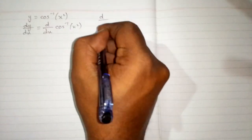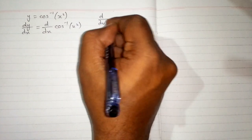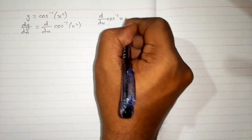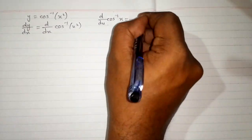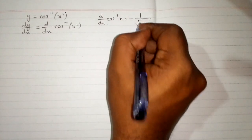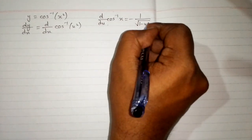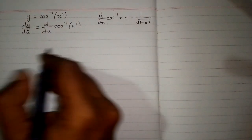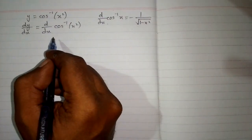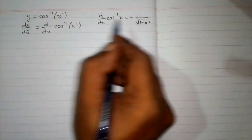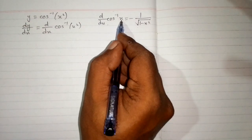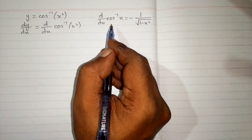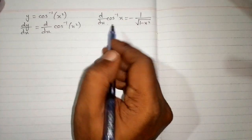We know that the derivative of inverse cosine of x is minus 1 upon square root of 1 minus x square. So here we can see that we have x square in place of this x, so we cannot apply this formula directly.